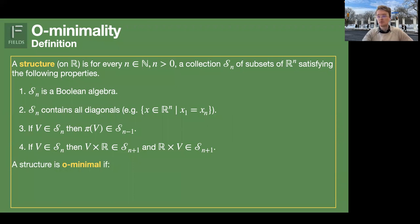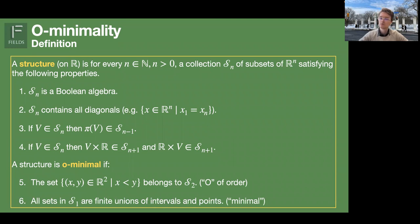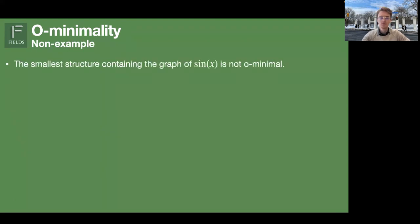Then we put some conditions on these sets. The first, which explains the 'O' in O-minimal, is that we want the order to belong to our structure — that is, the set of all x less than y is in our structure. And then we want it to be minimal: we ask that the subsets of R¹ are just finite unions of intervals and points. That's the minimality axiom. As a non-example, consider the smallest structure containing the graph of the sine function — it violates the minimality axiom because the sine has infinitely many zeros, defining infinite discrete sets.